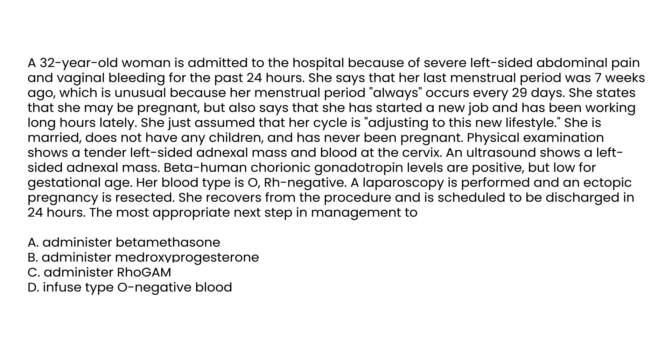Next question: 32-year-old woman is admitted to the hospital because of severe left-sided abdominal pain and vaginal bleeding for the past 24 hours. Her last menstrual period was seven weeks ago. Physical exam shows tender left-sided adnexal mass and blood at the cervix. An ultrasound shows a left-sided adnexal mass. Beta-hCG levels are positive but low for gestational age. Blood type is O Rh negative. A laparoscopy is performed, an ectopic pregnancy is resected. She recovers from the procedure and is scheduled to be discharged in 24 hours.